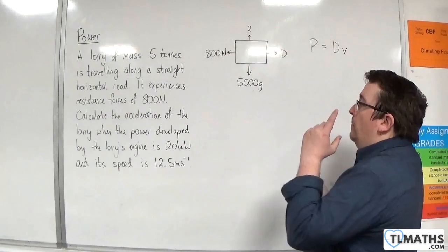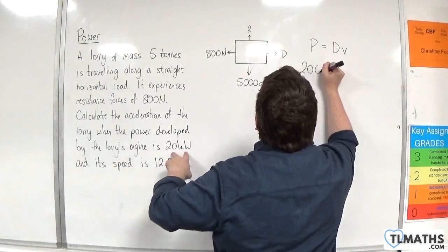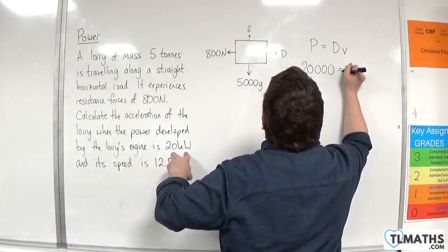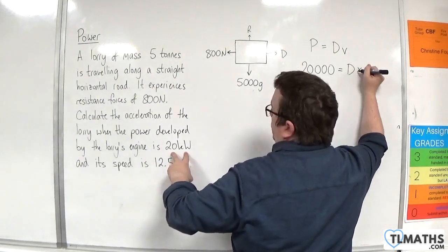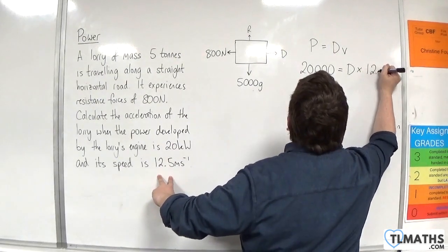So p, the power, is 20 kilowatts. So that's 20,000. And that's going to be equal to d times the speed which is 12.5 metres per second.